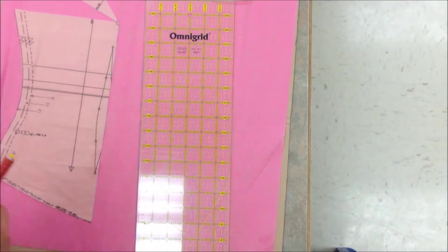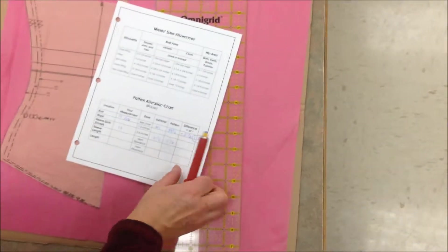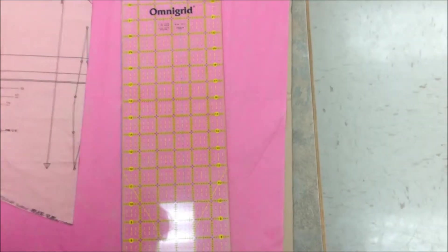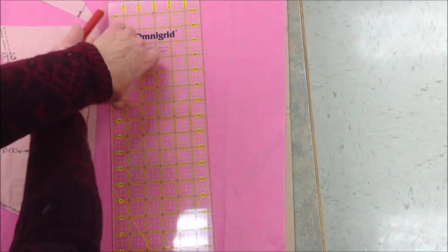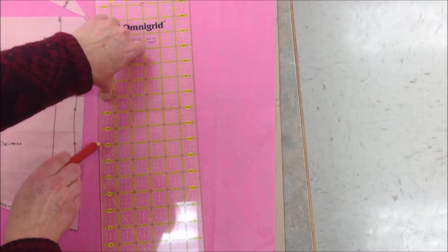And then we want to draw straight down from our apex. And in referring to our alteration chart, it's an inch and a quarter. So now we'll come to the left, an inch and a quarter. We'll draw another line.